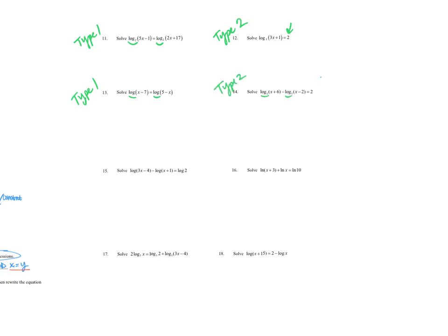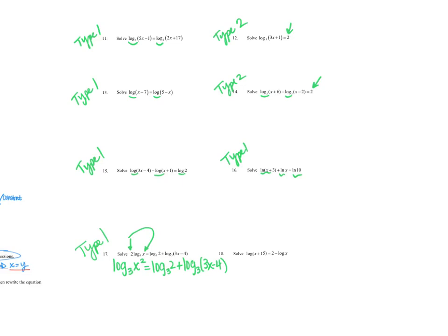Equation 14 is Type 2 because it has a log of something and a log of something but then a constant. Equation 15 is Type 1 — logs on everything. Equation 16 is also Type 1. For equation 17, that 2 might look like a constant, but it's a coefficient on the log, so it can become a power: log base 3 of x squared equals log base 3 of 2 plus log base 3 of (3x minus 4) — still Type 1. Equation 18 is Type 2 because that 2 is not a coefficient; there's a minus sign, so we can't bring it to the back.